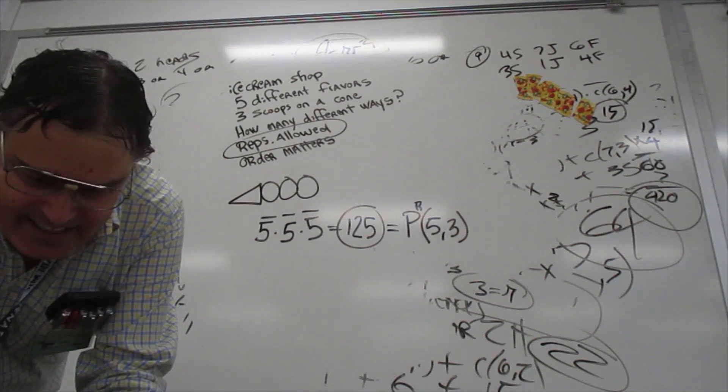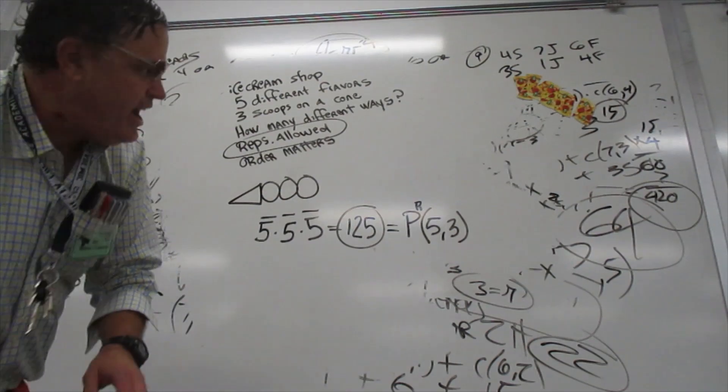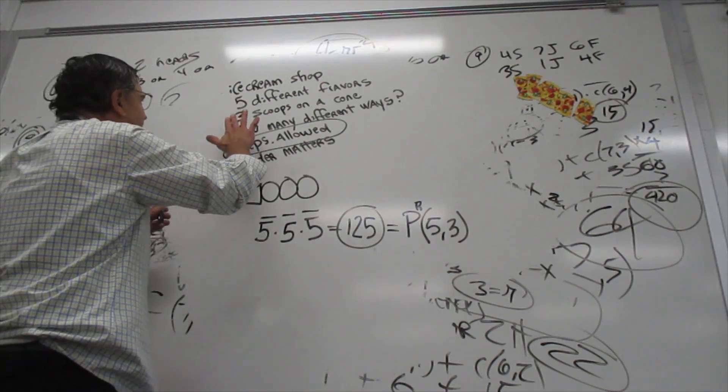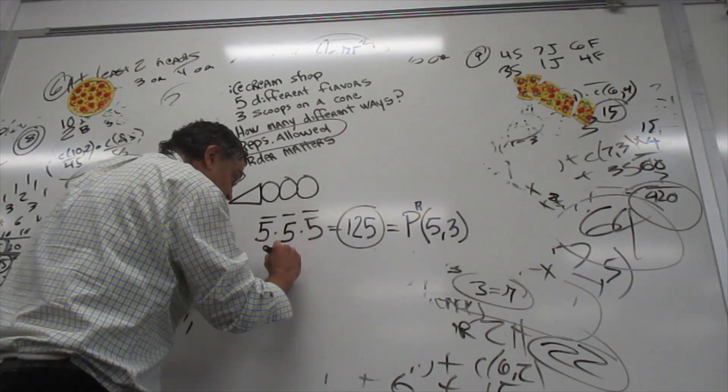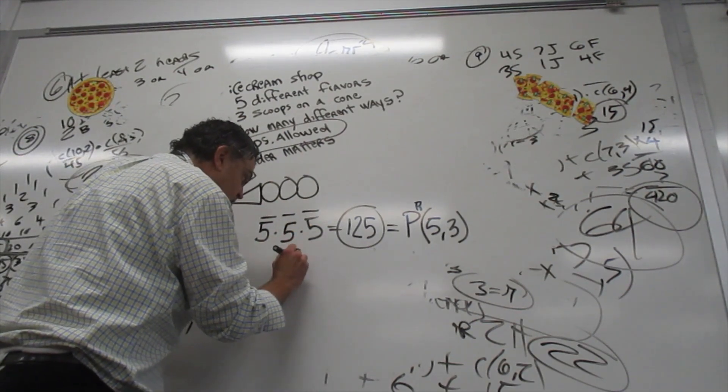I think I did this in another problem where you have eight scoops on a cone. But before we do that, this is five times five times five, which is five cubed.